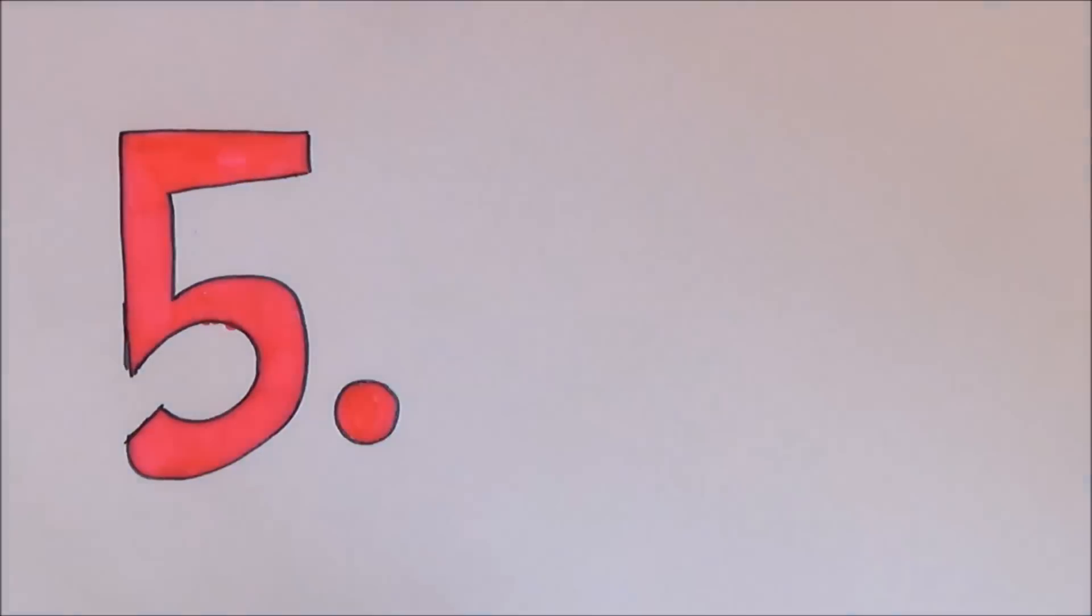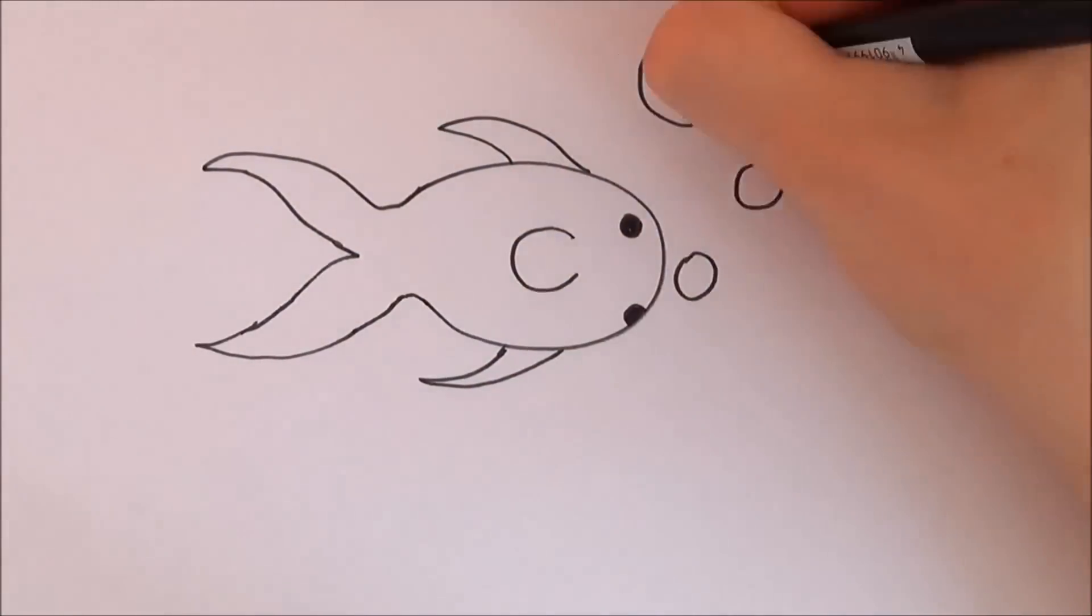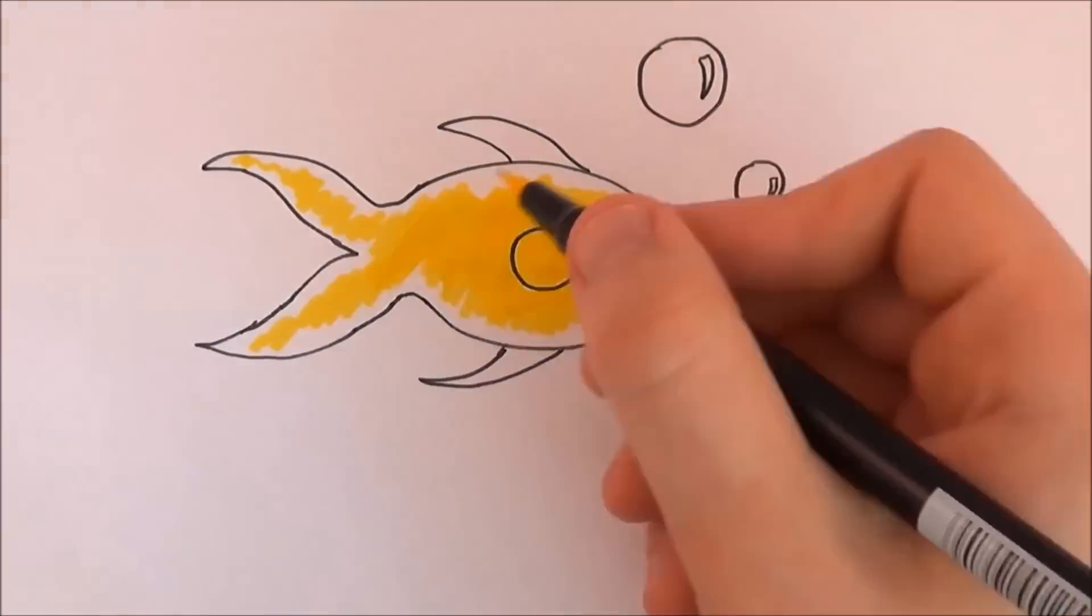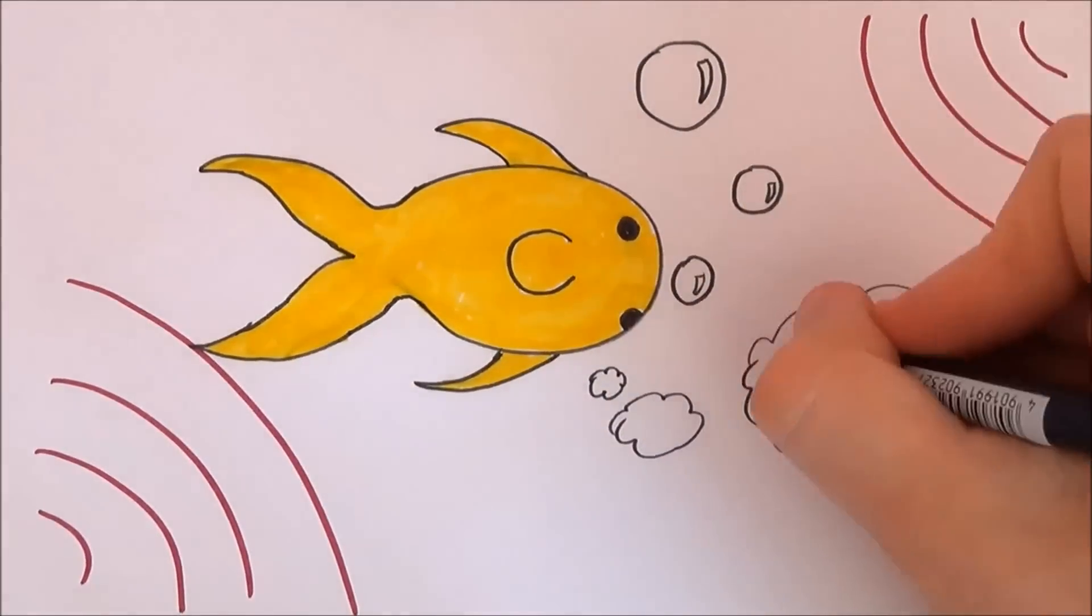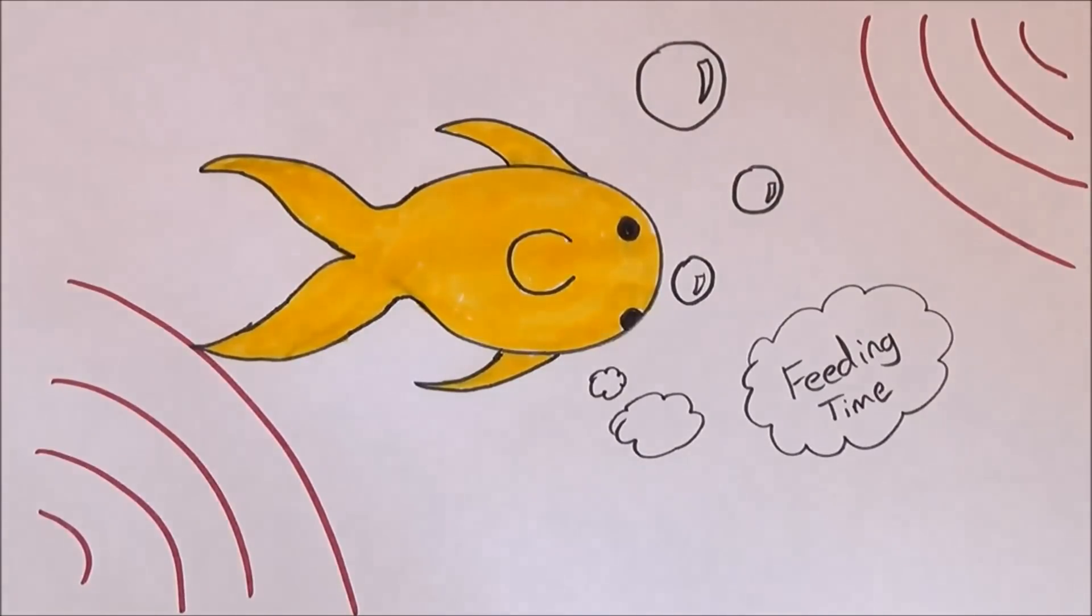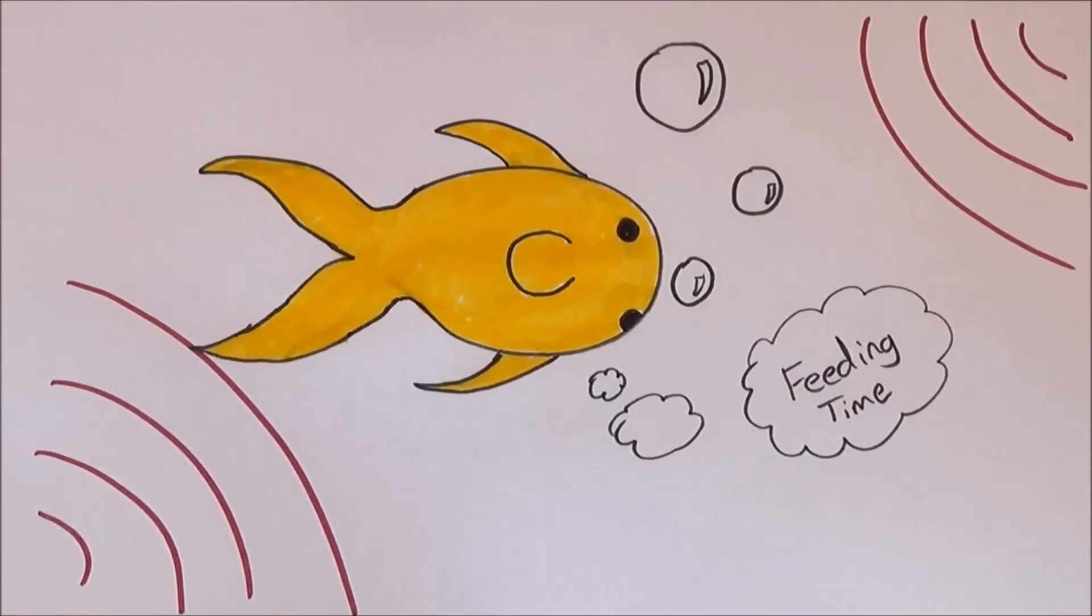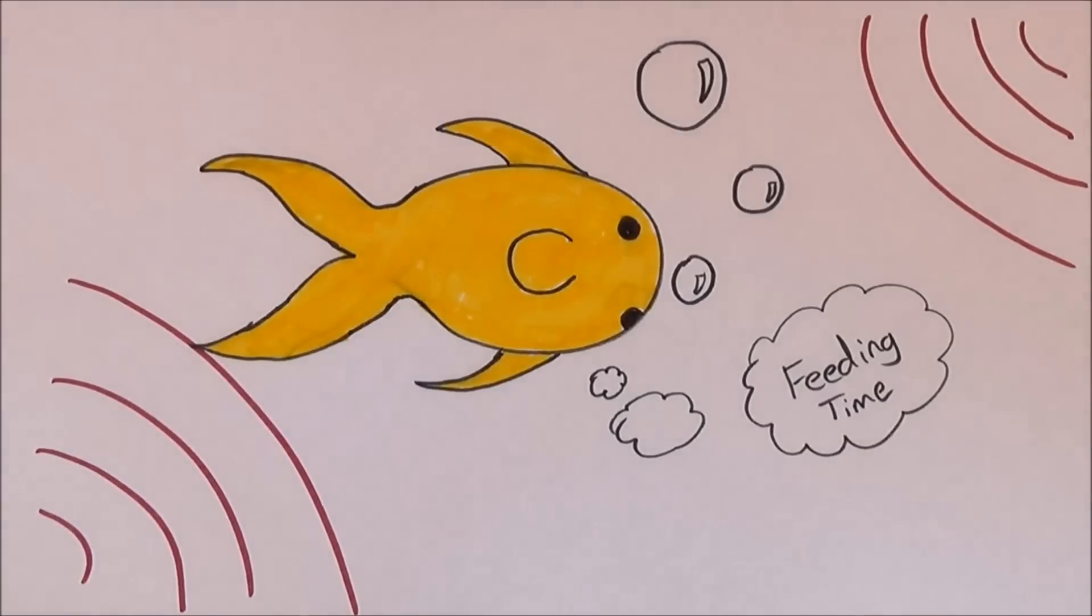Number 5. Goldfish have terrible memories. Just because they swim in circles all day, doesn't mean they're an idiot. Goldfish have actually been proven to be rather smart when it comes down to it. They have shown abilities to relate vibrations to feeding time, so that they know when you're about to feed them. This is why when you go near the fish tank, they all generally swim towards the top.